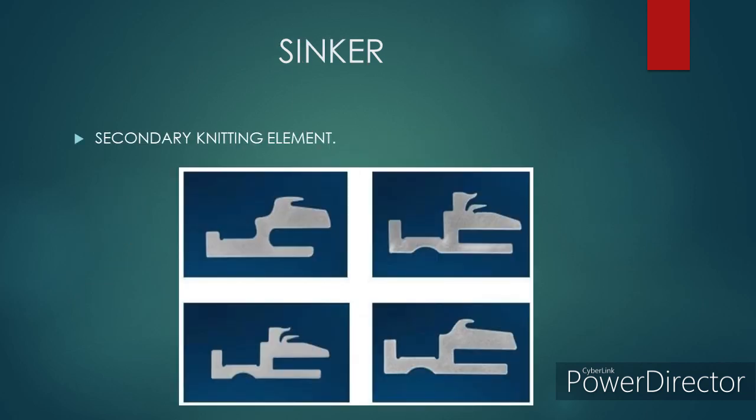The sinker is also a basic element, next to the needle, and is called the secondary knitting element. It is a thin metal plate positioned between two needles, used in both warp and weft knitting machines. The main function of the sinker is to hold the fabric during the loop formation process. The needle and sinker move at right angles to each other. The shape and function of the sinker may differ depending on the machine manufacturer.